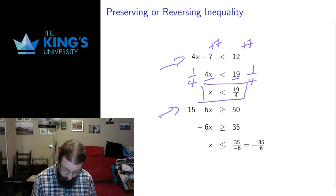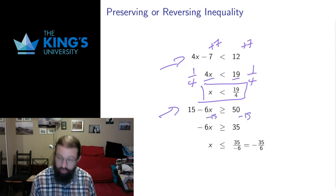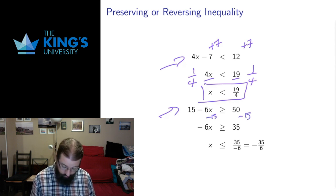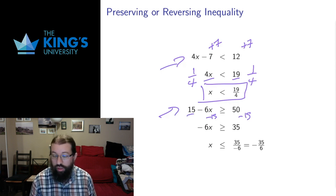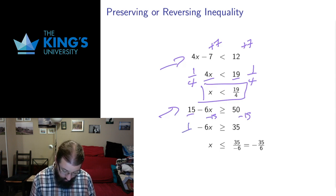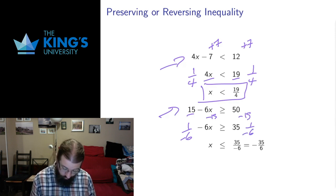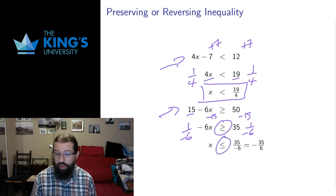Let's look at the second example. Here I'm going to subtract 15 from both sides, so the 15 minus 15 on the left goes away. 50 minus 15 is 35, so I'm left with negative 6x greater than or equal to 35. Then I'm going to divide by negative 6. Dividing by a negative number switches the inequality, so the direction switches.